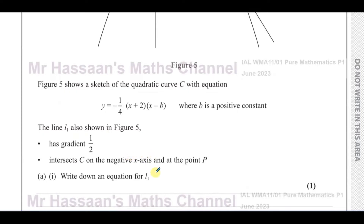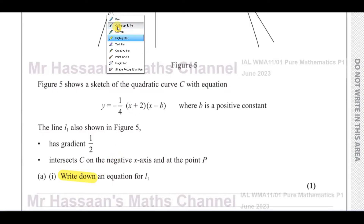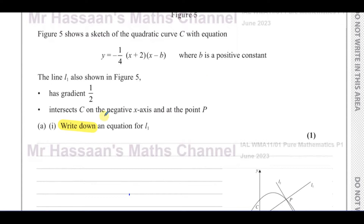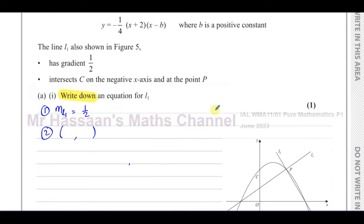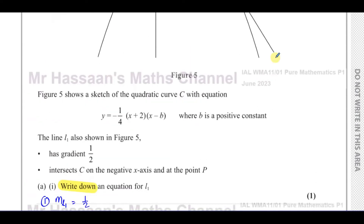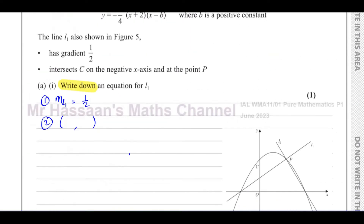Part A1 says: write down an equation for line L1. The word 'write down' implies there's not much calculation involved. An equation of a straight line requires two things: the gradient, which we're already told is one-half, and any point on the line.